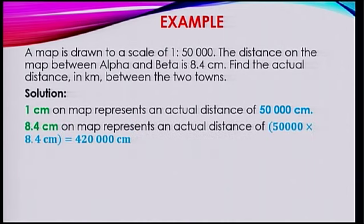So 8.4 cm — what do we need to do? You just need to multiply it. So that will be 50,000 multiplied by 8.4, which gives 420,000 cm.